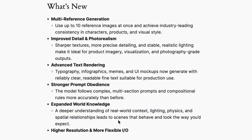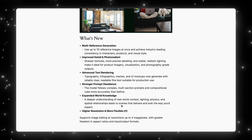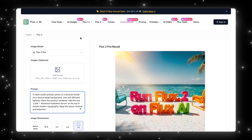There's also higher resolution and more support for image editing, going up to 4 megapixels, with greater freedom in aspect ratios and input and output formats. We can see Flux 2 has gotten upgraded and is trying to compete with models like Nano Banana Pro, since all these new features seem similar to what launched there as well. So I'm going to try this model out — I'll put the link for the website in the description.